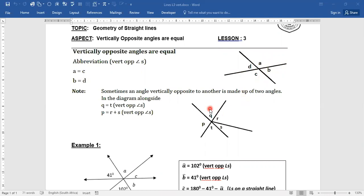Now, sometimes the diagram looks a little bit more involved or hectic, not a simple X like in this example here. So we're looking at this example here. We have angle P. Now vertically opposite angle P is not R or S. It's both R and S.